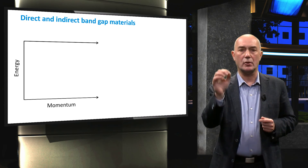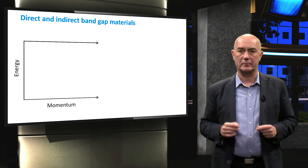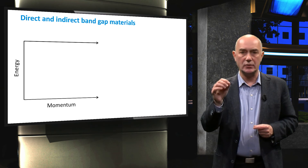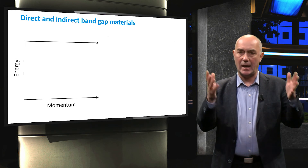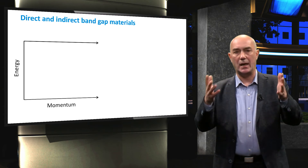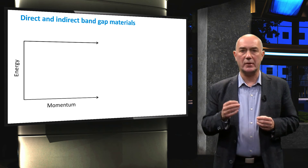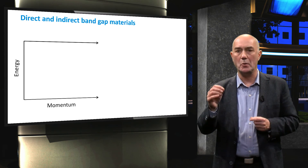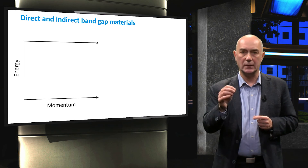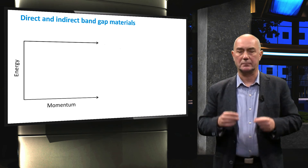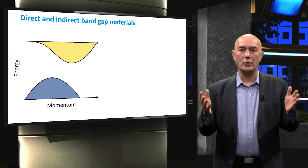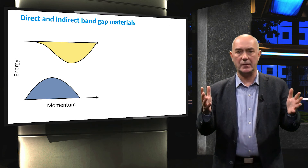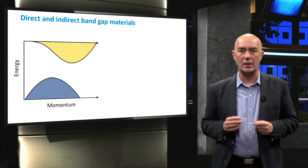This momentum is also called the crystal momentum. As discussed before, a photon can change the energy position of the electron. Just as light can be described as a wave and as a particle, the lattice vibrations can also be described as waves and as particles, which we call phonons. A phonon can change the momentum of an electron. It is important to realize that the position of the valence and conduction band may differ in different directions of the lattice coordination.